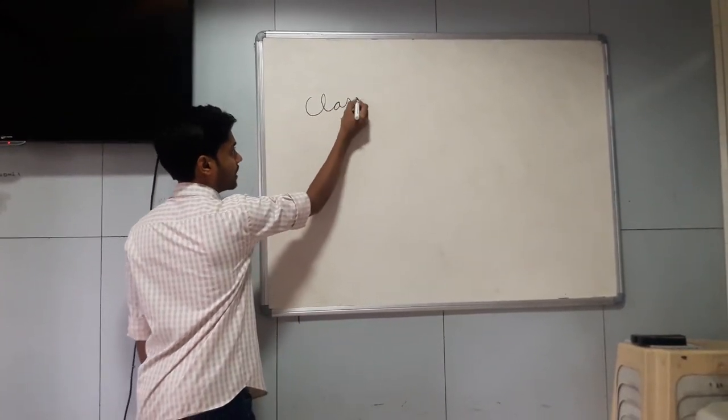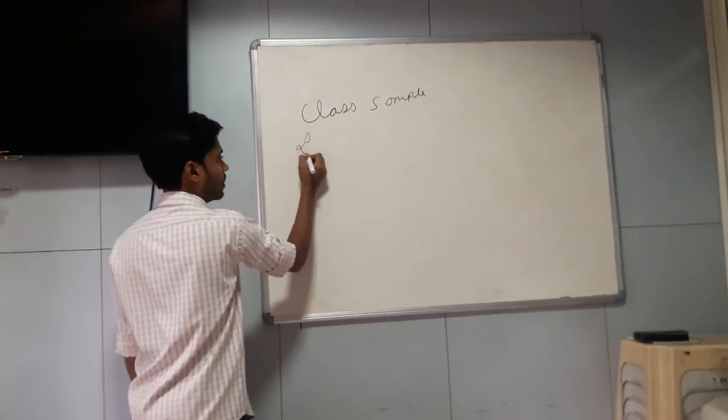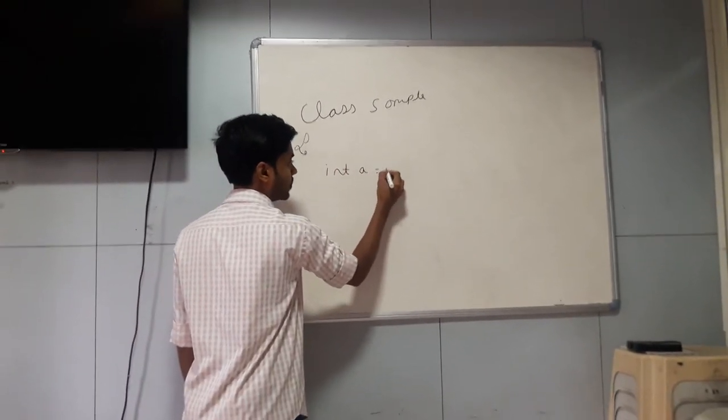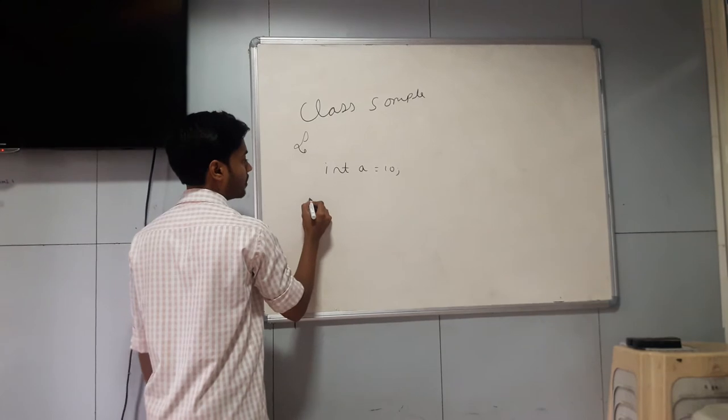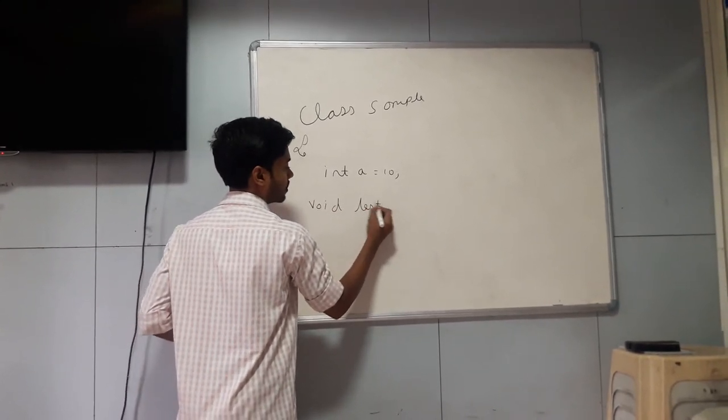Let me name the class as class sample1. Within this, let me have two properties. In this case, one int a is equal to 10. And then, we have one method.